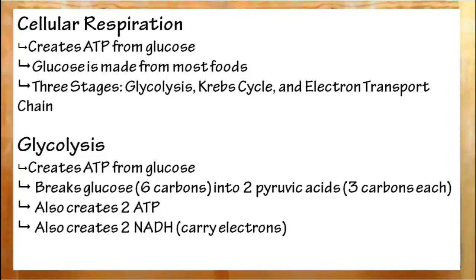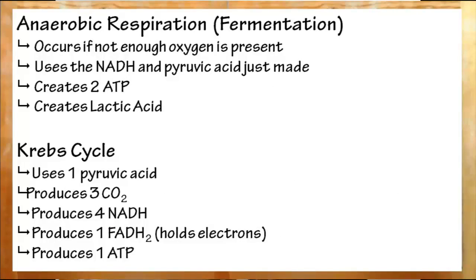To recap, cellular respiration creates ATP from glucose. In glycolysis we break glucose apart to create two pyruvic acids, two ATP and two NADH. ATP is the energy the cell uses. NADH just holds onto electrons until the electron transport chain. If you don't have enough oxygen, you'll go through fermentation, which produces two lactic acid and two ATP from the pyruvic acid and NADH you just made. Lactic acid causes a burn.